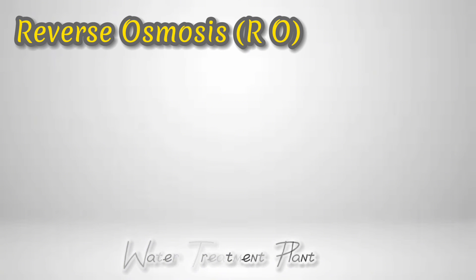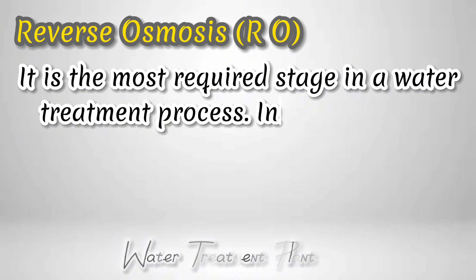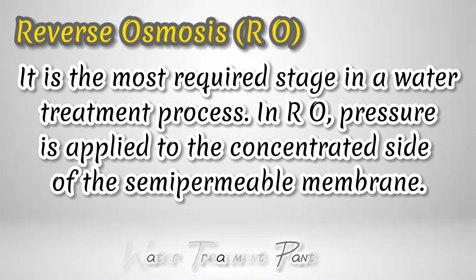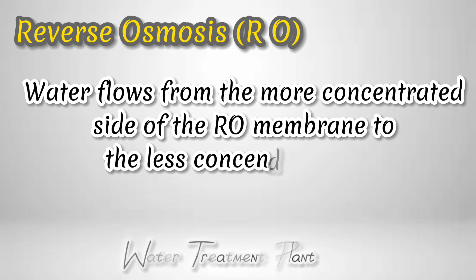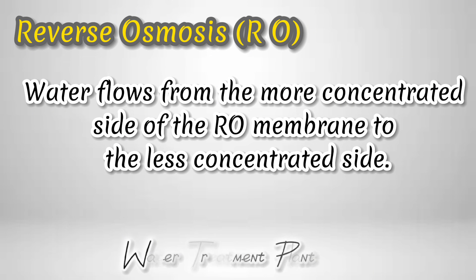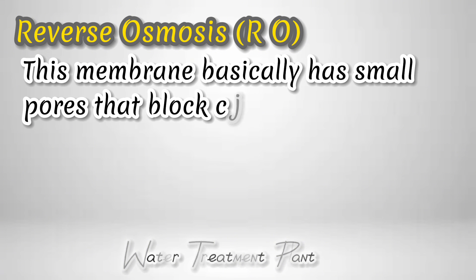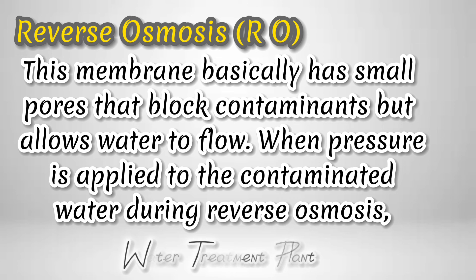Reverse Osmosis (RO): It is the most required stage in a water treatment process. In RO, pressure is applied to the concentrated side of the semipermeable membrane. Water flows from the more concentrated side of the RO membrane to the less concentrated side. This membrane has small pores that block contaminants but allow water to flow when pressure is applied to the contaminated water during reverse osmosis.